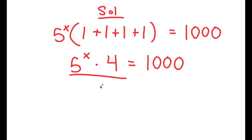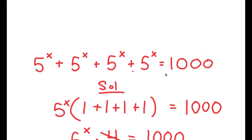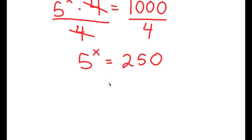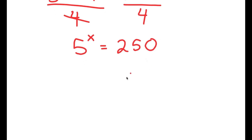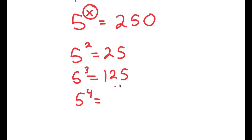Now we want to isolate x, so I'm going to divide both sides by 4, and I get 5 to the power of x is equal to 1000 divided by 4, which is 250. Just at first glance, we can tell that x is not going to be a whole number because 5 squared is 25, 5 to the power of 3 is 125, and 5 to the power of 4 is 625. So the value of x is somewhere in between 3 and 4.